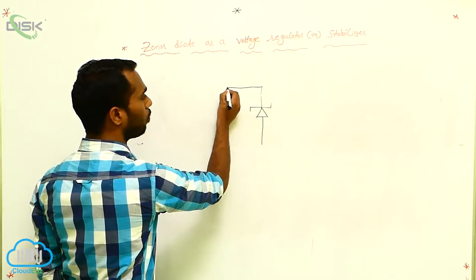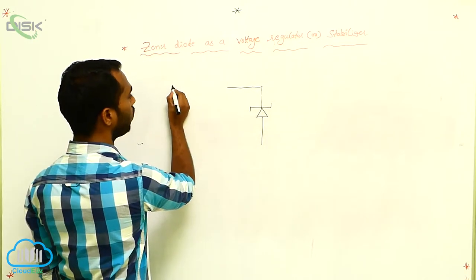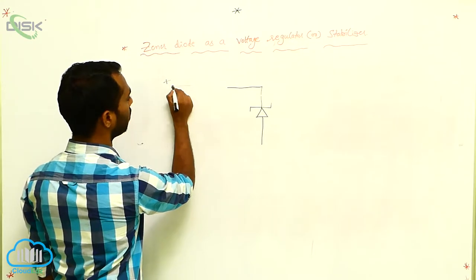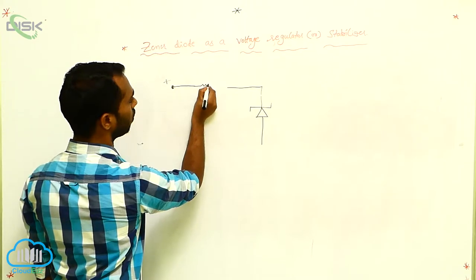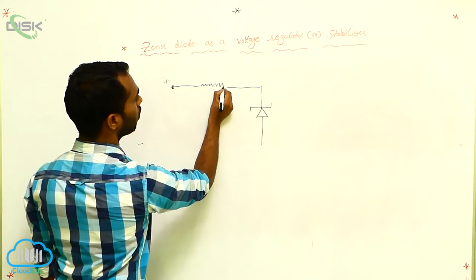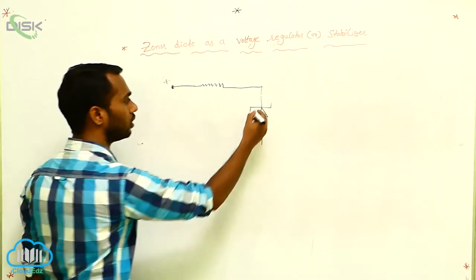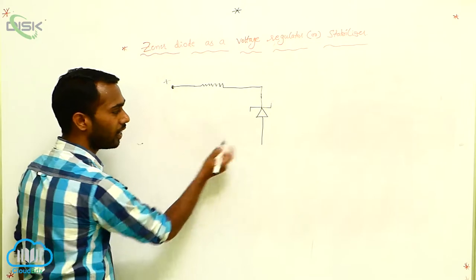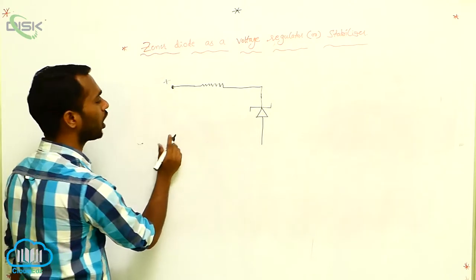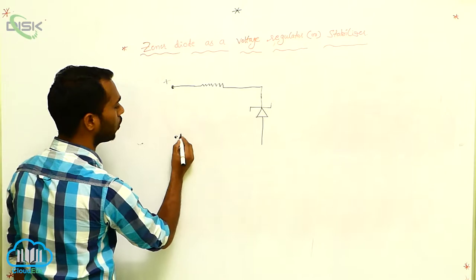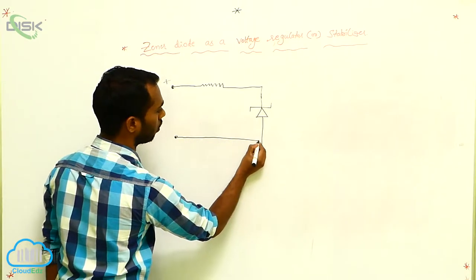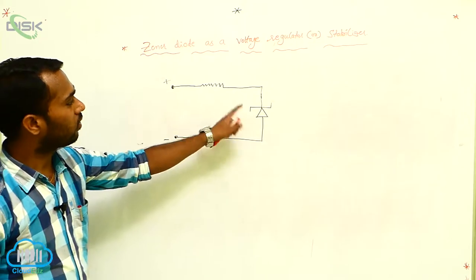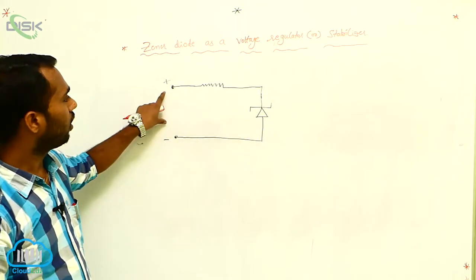I am connecting the N part to the positive terminal through a resistor. The P part I must connect to the negative terminal. Then the circuit is in reverse bias. It is a Zener diode connected in reverse bias, with a resistor in series.